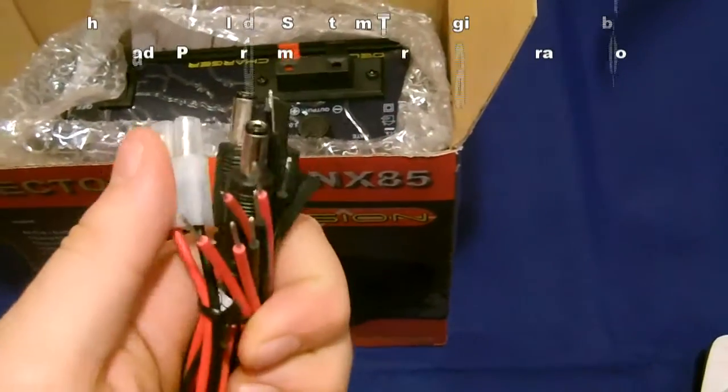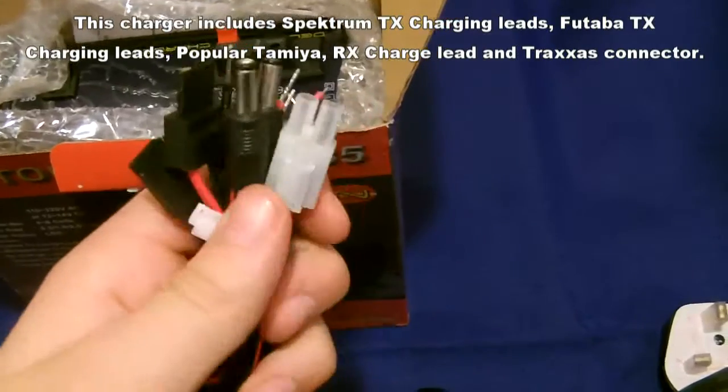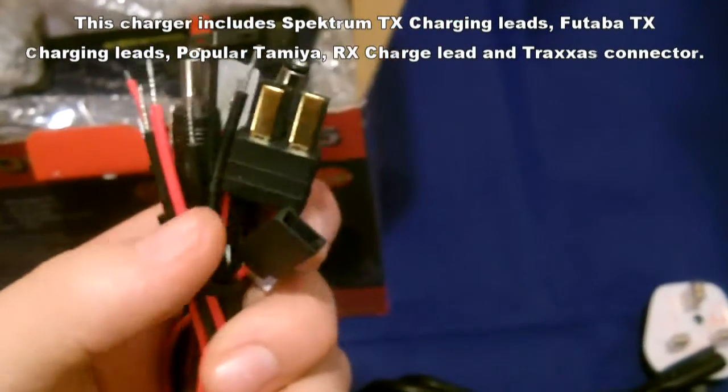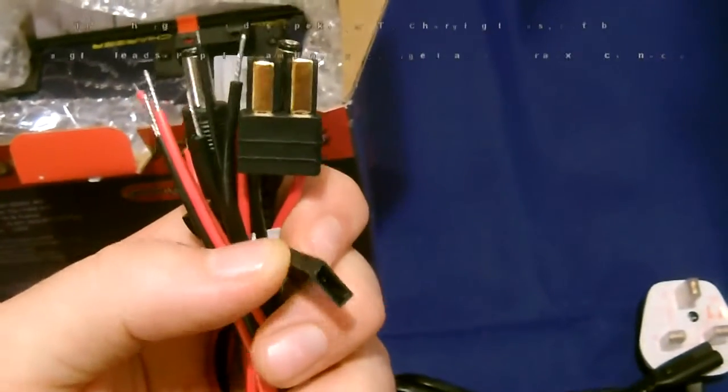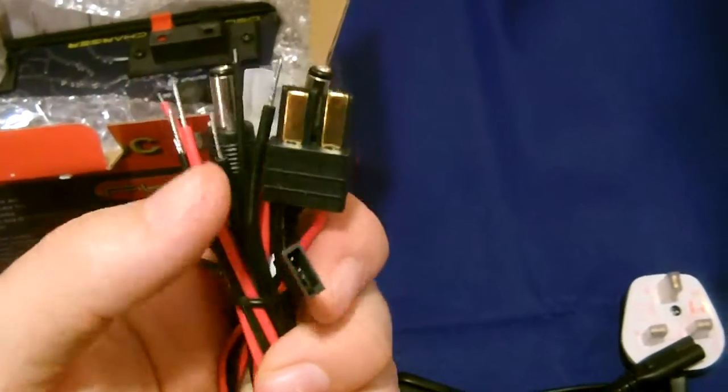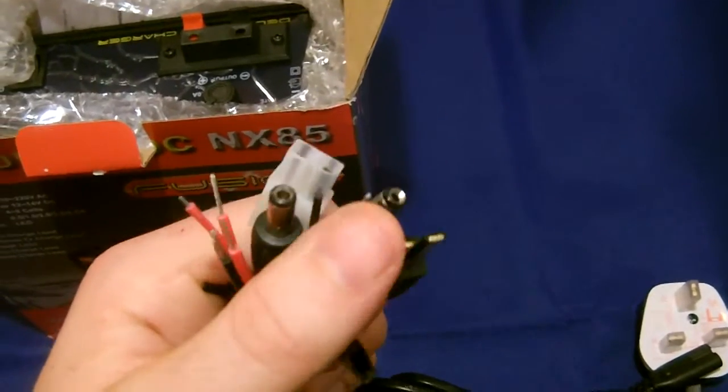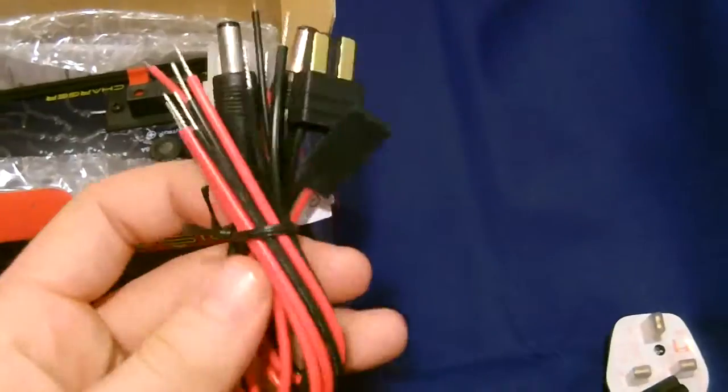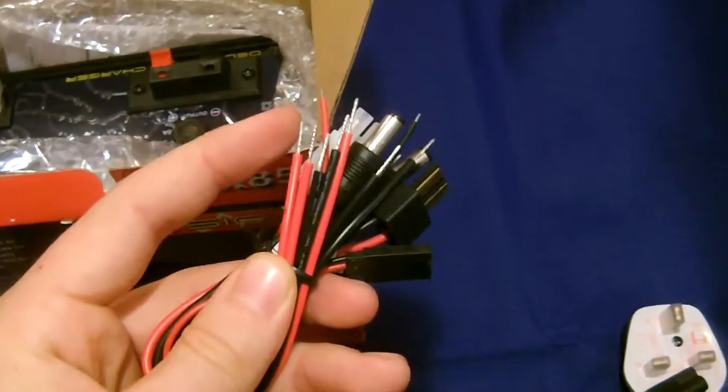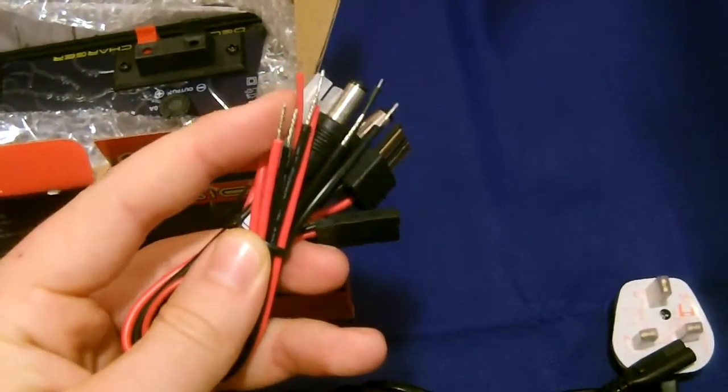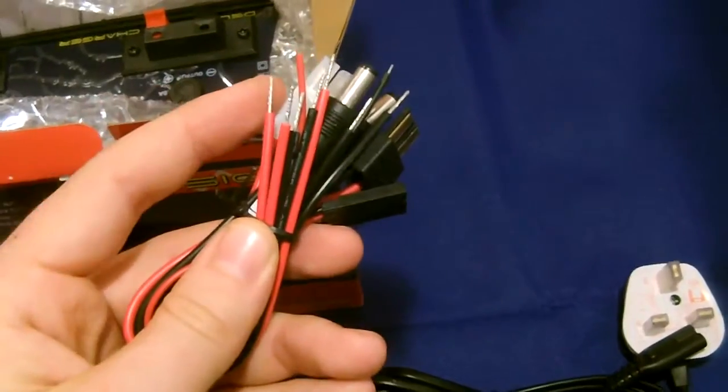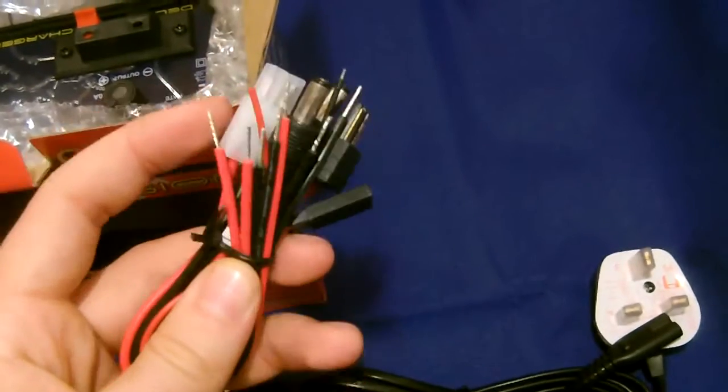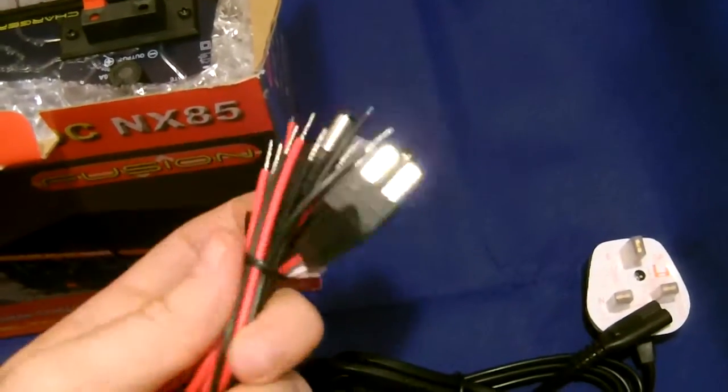Next coming out are the different battery connectors for the different connectors you're using on your batteries. So you've got the, let me get this right, JR connector here, Traxxas connector, transmitter connectors, and of course the Tamiya connector. These wires, this is a clampy wire style charger so these wires you can just clamp into the charger for quick and easy installation.